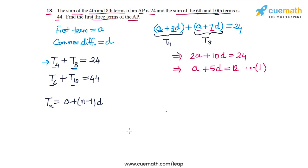Similarly we'll get another equation using the second equation. So T6 is A plus 5D, and then T10 is A plus 9D. This should be equal to 44.